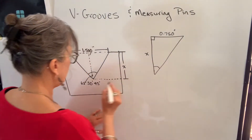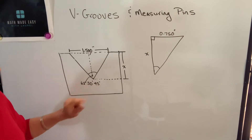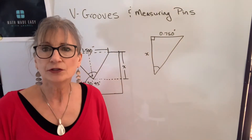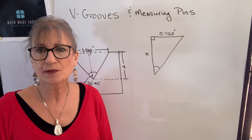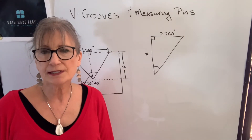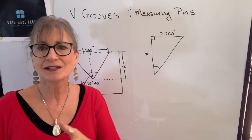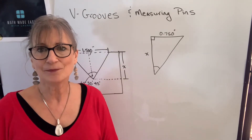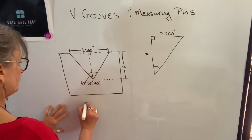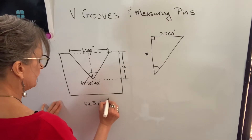Our angle will be half of this angle. The angle is expressed in degrees, minutes, and seconds. If your calculator can handle using the trig functions with your angle in degrees, minutes, seconds, you can keep it in that form. I'm going to change to decimal degrees, and I'm going to use the function on my calculator to change it from DMS to DD. I get 62.5125 degrees.